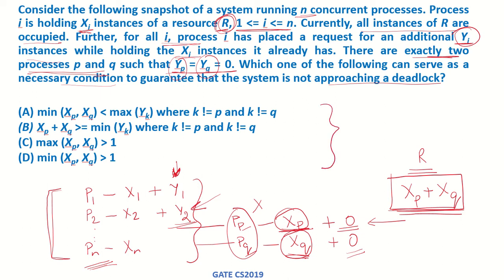If we look at all these conditions, we can see that if xp plus xq is greater than or equal to the minimum yk, out of all these yks that we have, whichever one is the minimum, if that can be satisfied by xp plus xq, then that particular process can run and keep on releasing its resource which can be further utilized. So xp plus xq greater than or equal to minimum of yk, where k is not equal to p and q because p and q processes have already run. This is the condition which will guarantee that the system does not fall into a deadlock.